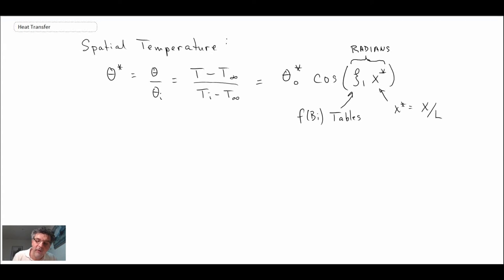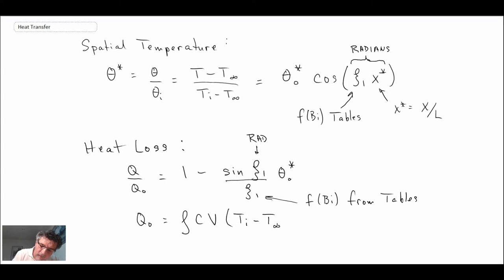Make sure your calculator is in radians when you evaluate that term, or you will calculate it incorrectly. And then the final thing that we're going to get using the approximate solution is the heat loss, the heat loss from our slab to the surroundings. Again we're using zeta 1 which is a function of the Biot number and from tables, and be careful, radians. Q naught, we talked about q naught with our nomenclature, it refers to the total amount of heat loss if the entire solid was to go from Ti to T infinity.